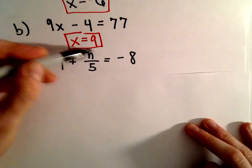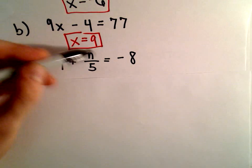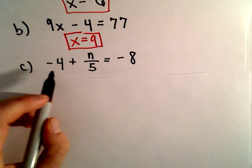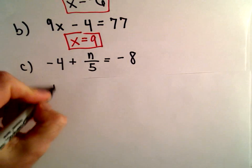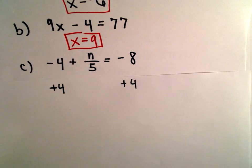I want to get the term involving the variable, in this case n, by itself. Since I have a negative 4, I'm going to add 4 to both sides.